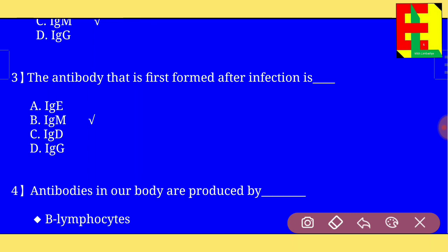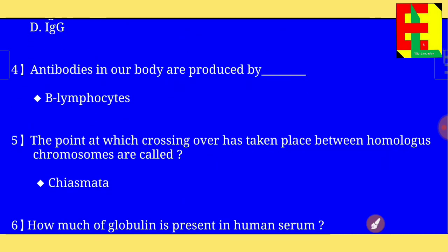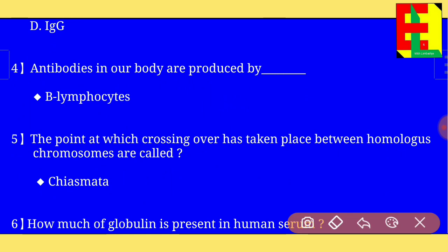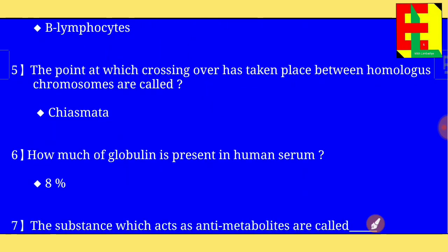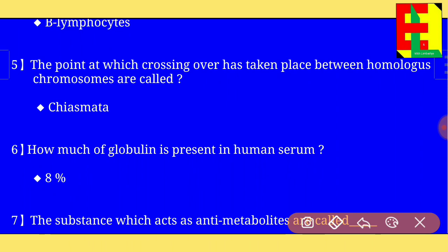Question number three: the antibody that is first formed after infection is IgM. Question number four: antibodies in our body are produced by B lymphocytes.